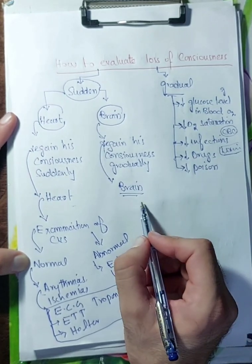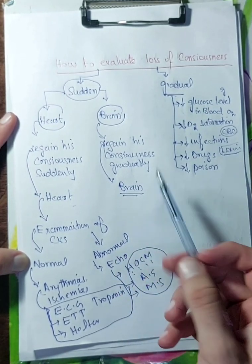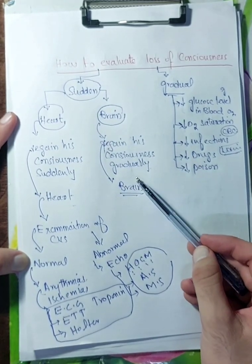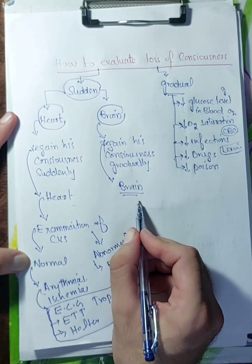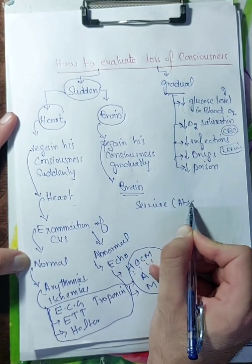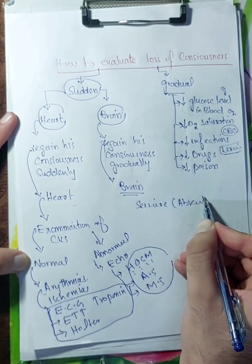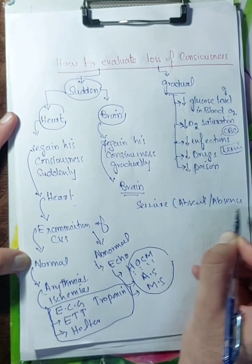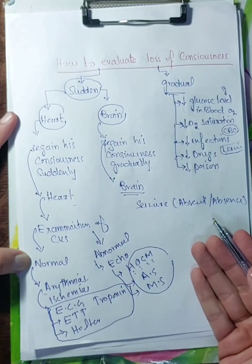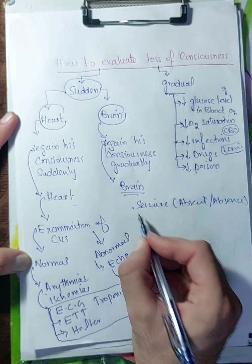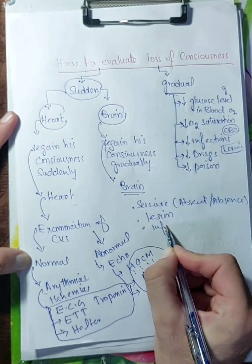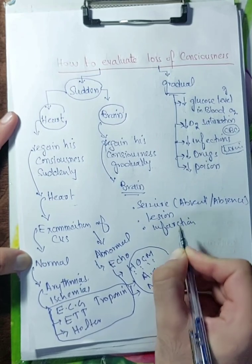Now we will focus on the brain. If the person lost his consciousness level suddenly and regained his consciousness gradually, the pathology is in the brain, maybe seizure, except absence seizure. Absence seizure regains consciousness suddenly and mostly occurs in children. Maybe there is some lesion, maybe there is some sort of infarction.